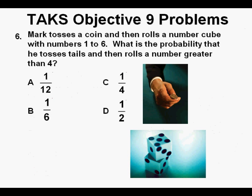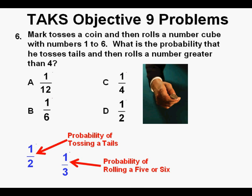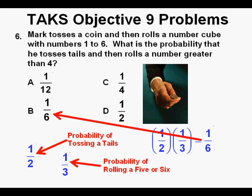Problem 6. Mark tosses a coin and then rolls a number cube with numbers 1 to 6. What is the probability that he tosses tails and then rolls a number greater than 4? This is another combined probability problem. The probability of tossing tails is 1 out of 2, or 1 half. The probability of rolling a number greater than 4 — those numbers are 5 and 6 — is 2 out of 6, or 1 third. Combined: 1 half times 1 third equals 1 sixth. We circle our correct answer B.